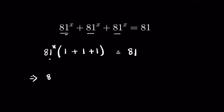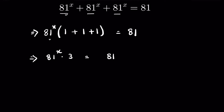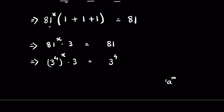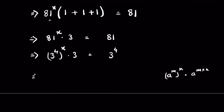81 raised to the power x times 3 is equal to 81. We can write 81 as 3 raised to the power 4, so we have 3 raised to the power 4, whole raised to the power x, times 3, equals 3 raised to the power 4. Using the identity where a raised to the power m, whole raised to the power n equals a raised to the power m times n, we write this as 3 raised to the power 4x times 3, equal to 3 raised to the power 4.